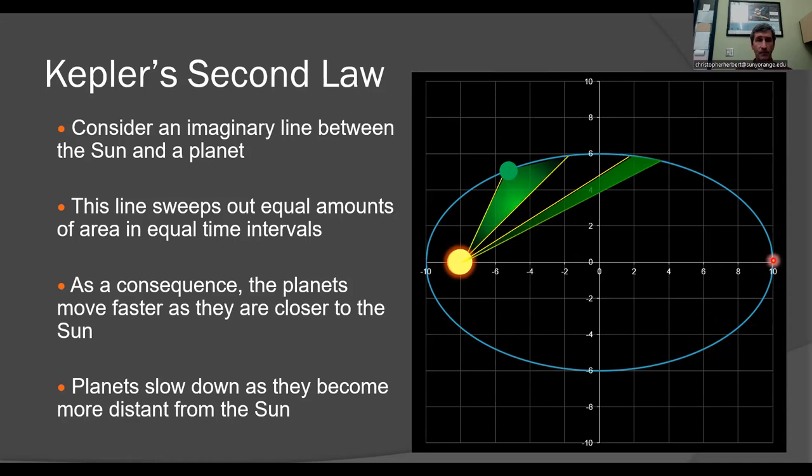But Kepler's second law is more precise than just we get faster closer to the sun, we get slower further from the sun. It states that if I draw a line between the sun and a planet, that line will sweep out equal amounts of area over equal amounts of time. So if a planet moves from here to here during one month, this area will be the same as this area. Always sweeps out the same amount of area.